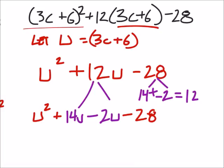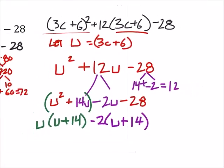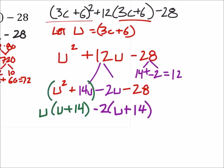So factoring by grouping, that's a u, not a v, by the way. Looks like all I can factor out is a u, so I've got u plus 14. And I'm going to take out a -2 from these two terms, giving me u plus 14. That's what we wanted. So when these factor even further, we've got our u plus 14 and our u minus 2.